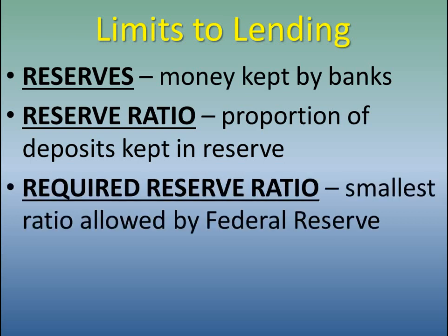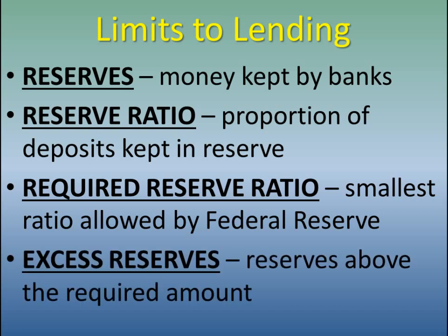The required reserve ratio is the minimum amount that must be kept in the bank at any one time, and that's set by the Federal Reserve — right now it's at 10%. So for every dollar deposited in the bank, the bank is allowed to lend up to 90 cents of it and must keep at least 10 cents back. Anything it leaves in reserves beyond 10 cents is what we call excess reserves — the amount of money left in the bank vault that is greater than what is minimally required by the Federal Reserve.